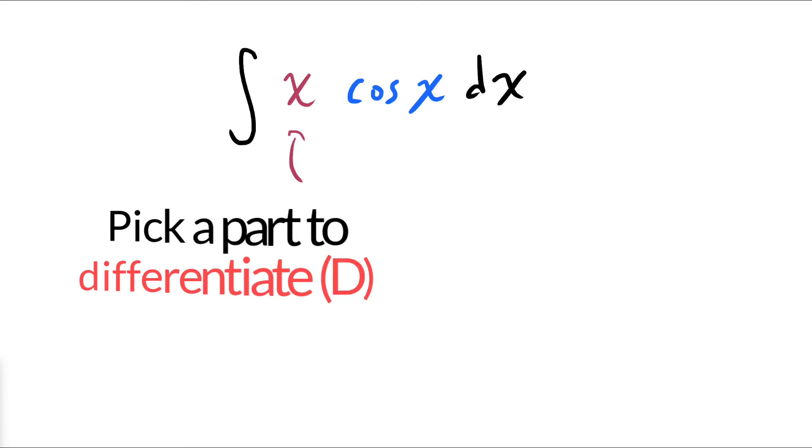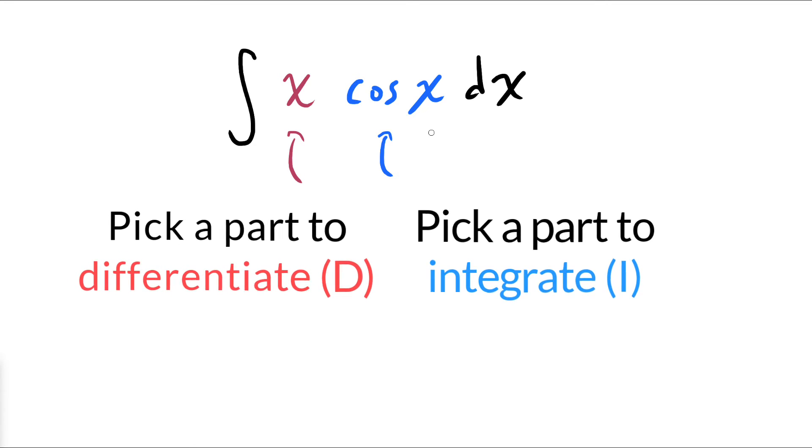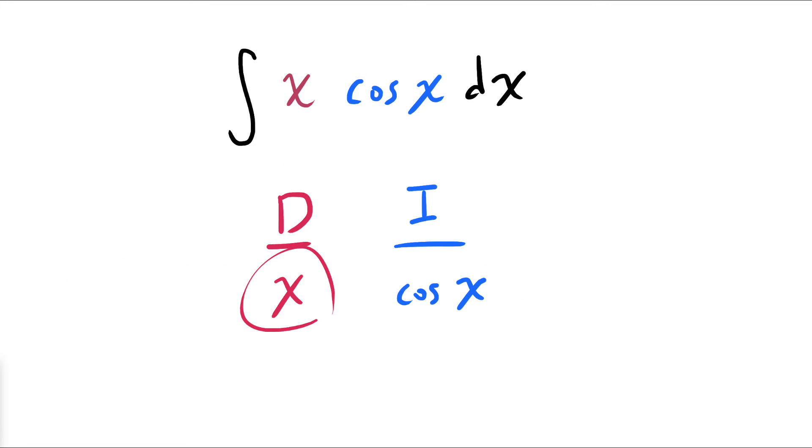The first step is to pick a part to differentiate, and a part to integrate. Here we picked x as the part to differentiate, and we picked cosine of x as the part to integrate.